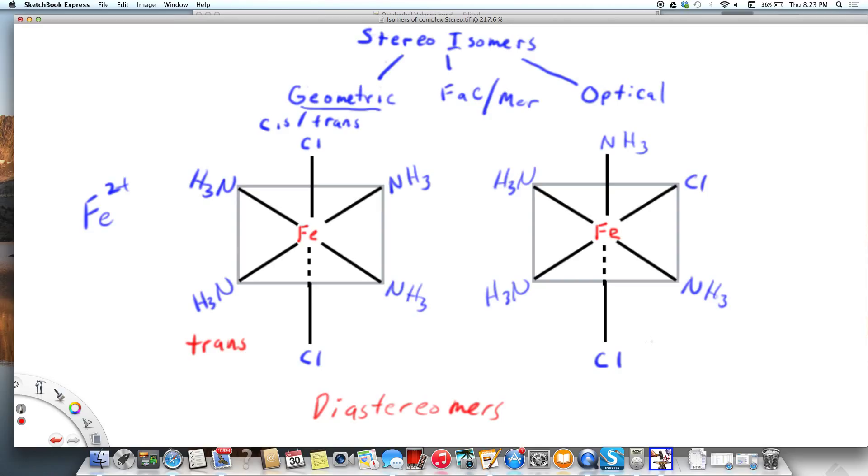So if I gave you the cis version and said draw the diastereomer, you would draw the trans version or vice versa. Those are stereoisomers, subset geometric isomers.